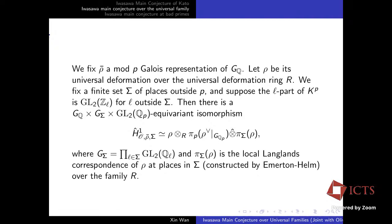Let me explain the notations. π_Σ(ρ) is the local Langlands correspondence of ρ at places in Σ, constructed by Emerton-Helm — this is the local Langlands correspondence at ℓ-adic places for ℓ ≠ p in families. π_p(ρ^∨) is the p-adic local Langlands correspondence for ρ^∨ restricted to G_{Q_p}, and ρ is the universal Galois representation.